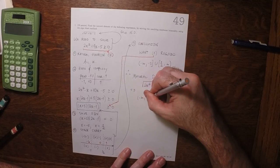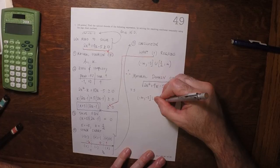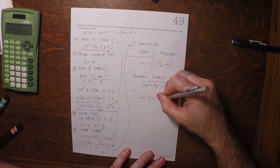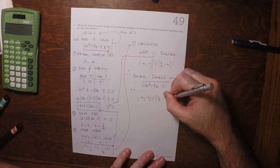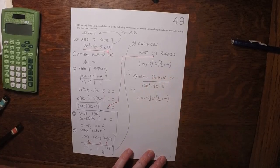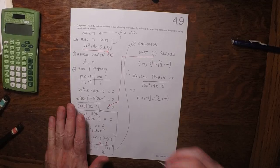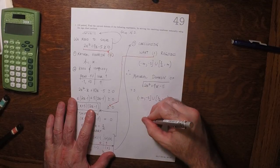Negative infinity to negative 5 union half to infinity. That's the answer to the question, but as a matter of foreshadowing,